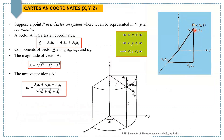Suppose a point P in a Cartesian system where it is represented in XYZ coordinates. If you draw a vector from the origin up to this point P, that is called a position vector and we can represent it as vector A. This vector A has component Ax along the x-axis, Ay along the y-axis, and Az along the z-axis, where small ax is the unit vector along the x-axis, small ay is the unit vector along the y-axis, and small az is the unit vector along the z-axis.